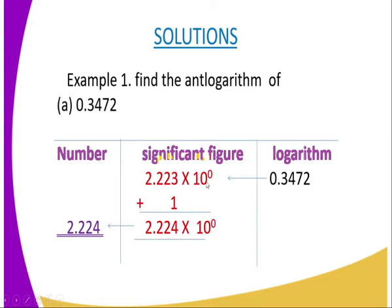The 0 in the logarithm represents the power of the standard form. When the number is written in standard form, 10 to power 0, this 0 here is the 1 which is normally placed at the logarithm. Any number raised to power 0 is equal to 1. Therefore, this number, if you multiply by 1, which is 10 to power 0, you are supposed to get the same number. Therefore, our number becomes 2.224.